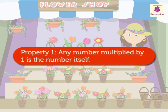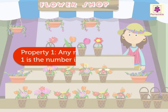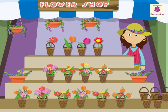Property 1: Any number multiplied by 1 is the number itself. Let us take an example in Rosie's shop and check this property.